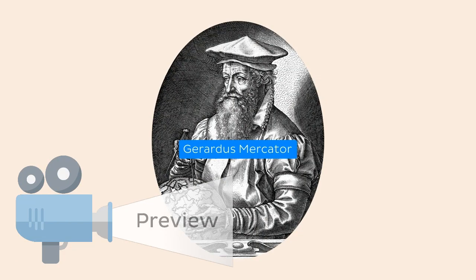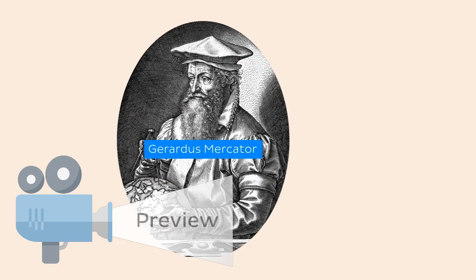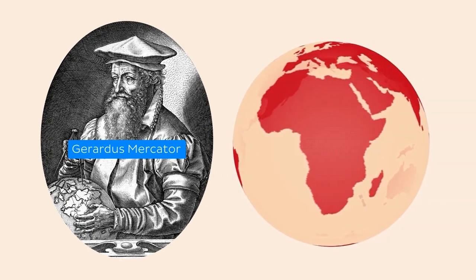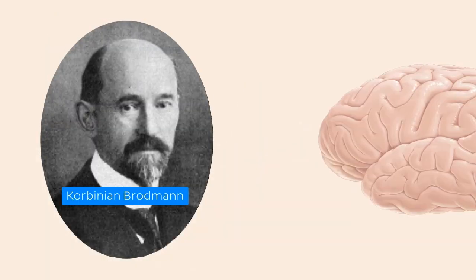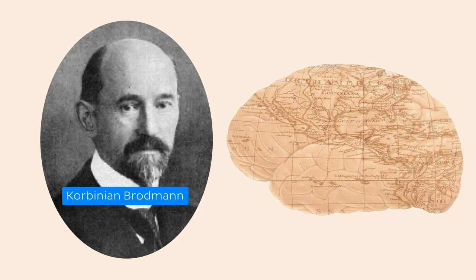Gerardus Mercator may be one of the most well-known cartographers to map the world onto a globe, but have you ever heard that the German anatomist Corbinian Brodmann was the pioneer of mapping the human brain?